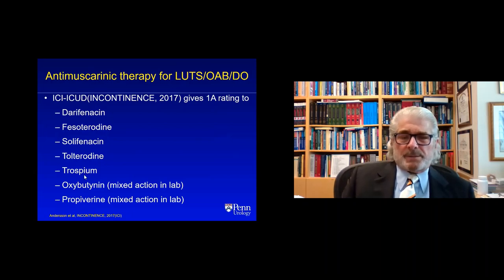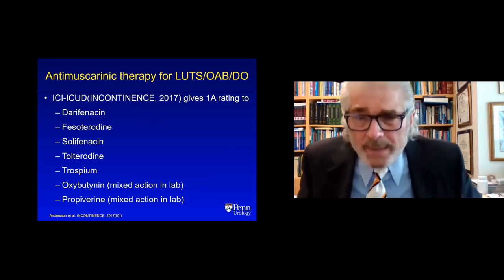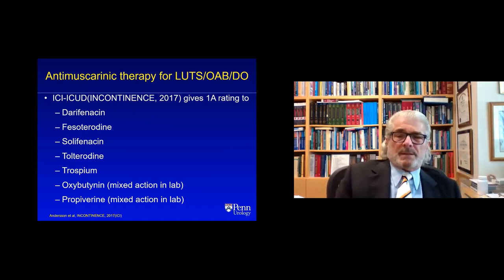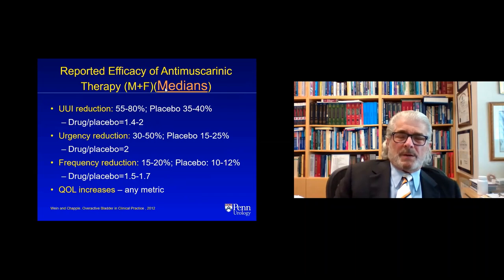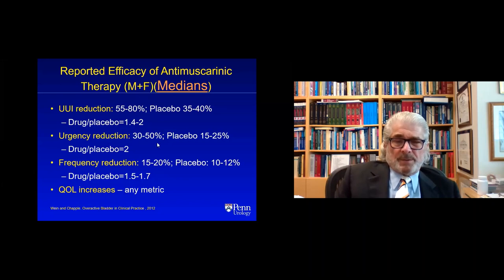These are all the anti-muscarinics and drugs with mixed actions given a 1A rating by the International Consultation on Incontinence, which rates evidence according to the Oxford system. In terms of what you can expect — these are median results, which are generally higher than mean results — for urge incontinence reduction, urgency episode reduction, and frequency reduction, this is what you can expect from drugs versus placebo. Pretty much any quality-of-life metric will increase with both drug and placebo, more so hopefully with drugs. These are useful numbers to remember.